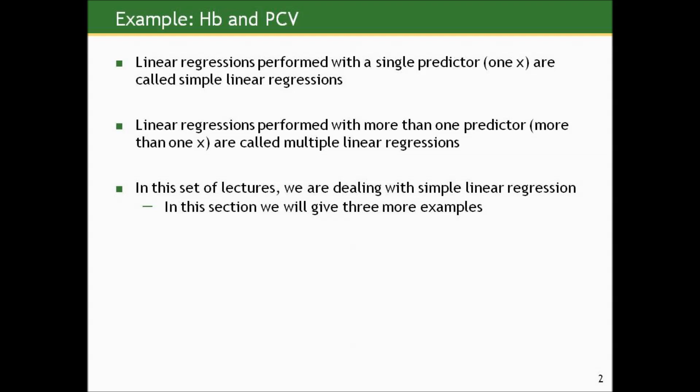Linear regressions performed with more than one predictor are called multiple linear regressions, and we'll be looking at those in lecture 5 as an extension of what we're doing here. But in this set of lectures we are dealing with simple linear regression, and in this section we will give three more examples.